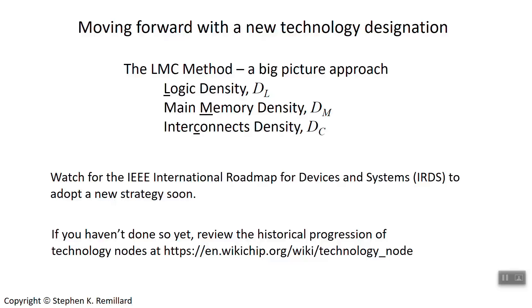My guess is that in the not-too-distant future, we're not going to be talking about the blank nanometer node anymore, but will be using one of these new designations. And there will probably be backtracking — if you go to wikichips.org, you could go back to 1970 and rename all of those technology nodes with the new method, whether GMT or LMC or some other method. When a method is adopted, it would be perfectly reasonable to go back through the long history of nodes and rename them.